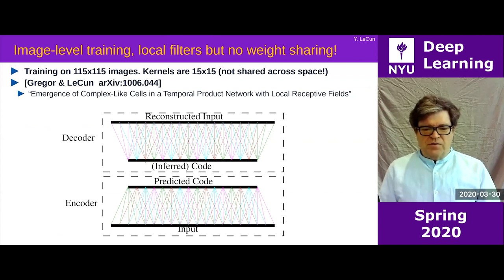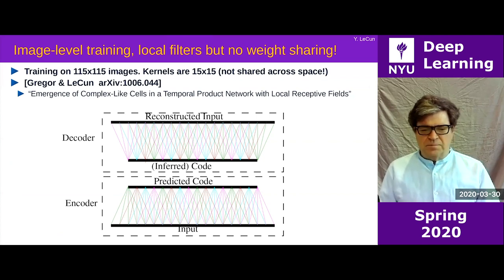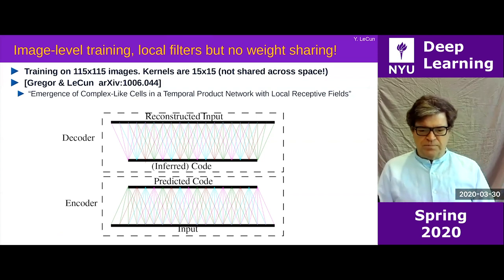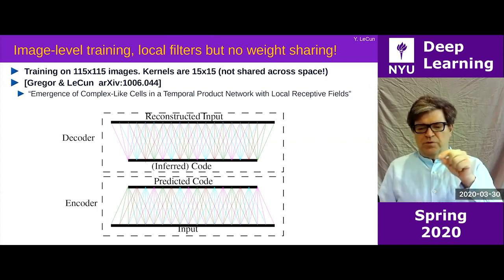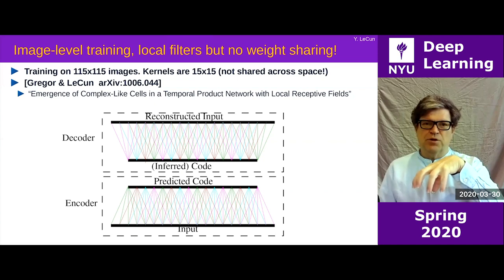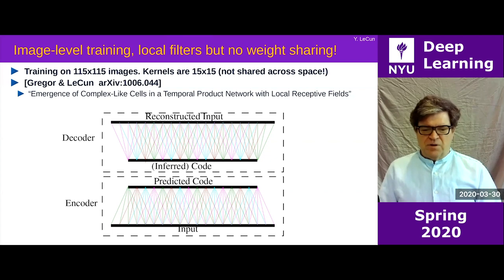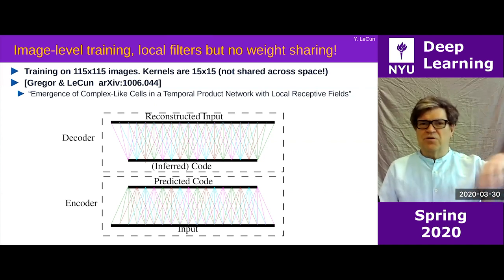This experiment is very similar to the one we just talked about, except here we have local connections. We have a 2D input — though we represent a 1D version of it — and units possibly multiple at one location looking at a local patch on the input. Those sets of units are replicated multiple times, but there's no shared weights. The units exist everywhere on the input, but the weights are not shared — they're just locally connected.